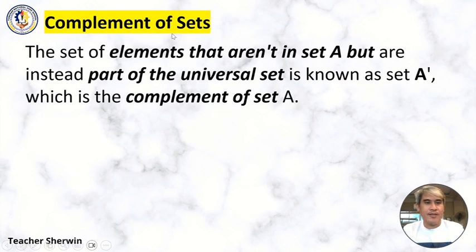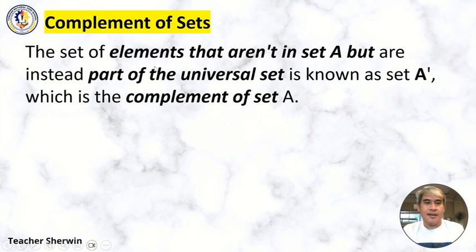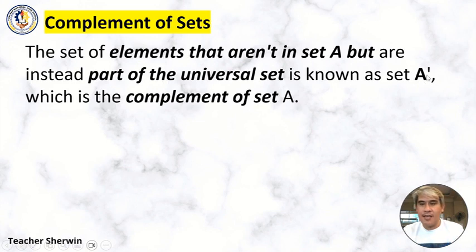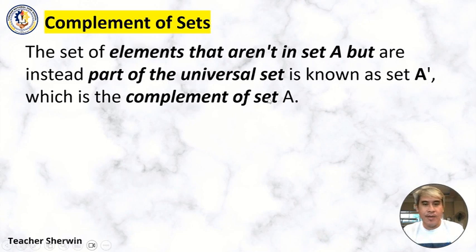Complement of Sets. The set of elements that aren't in Set A but are instead part of the universal set is known as the complement of Set A. The apostrophe is the representation of complement, which is the complement of Set A.